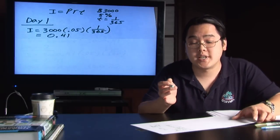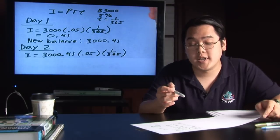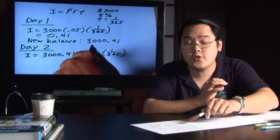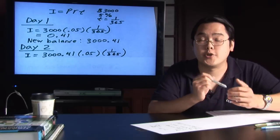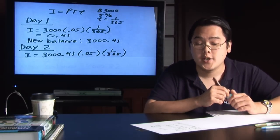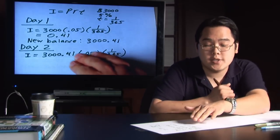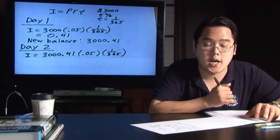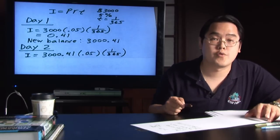So your new principal on day two is going to be $3,000.41. The other two numbers are still going to be the same, but your principal is going to slowly increase. So, plug in the new balance in the simple interest formula, 3,000.41 times .05 times 1 over 365,